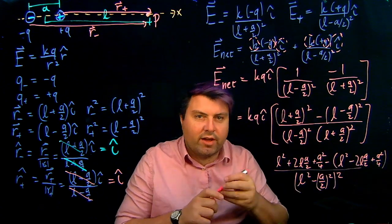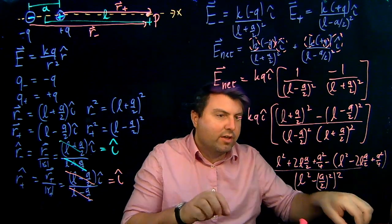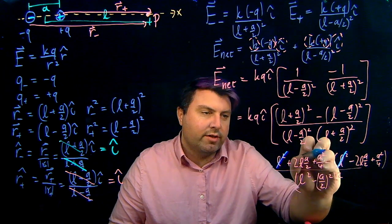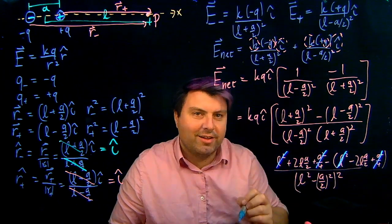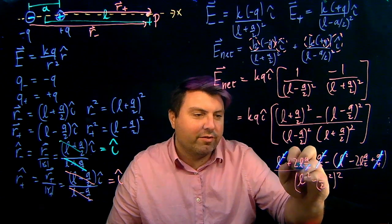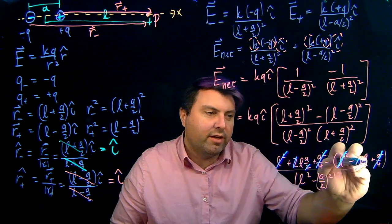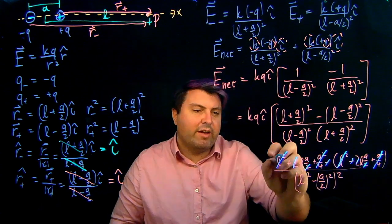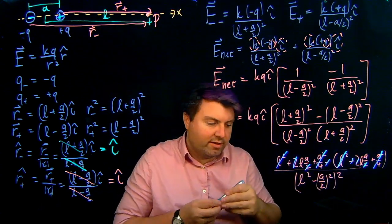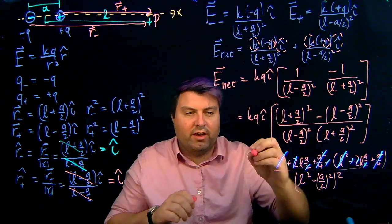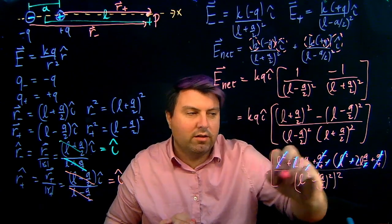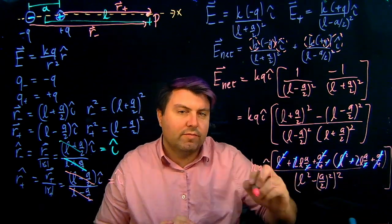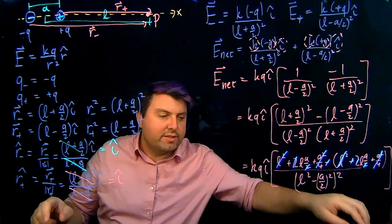So we can see that we have a lot of very shared terms. In here, we have this L squared and this L squared should cancel. This A squared over 4 and this A squared over 4 should cancel. If we want to be sufficiently rigorous, these 2s cancel, but this negative sign and this negative sign actually cancel. And so we have a plus and a plus, and not to forget our KQI hat.